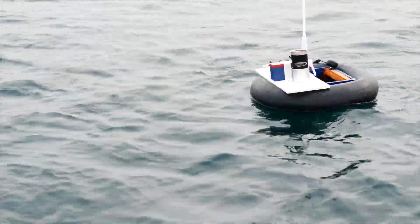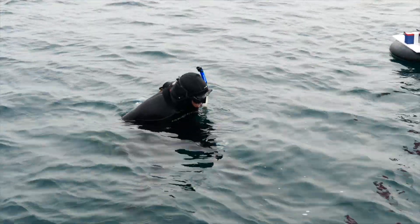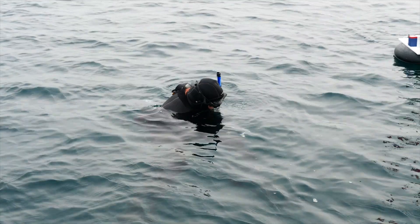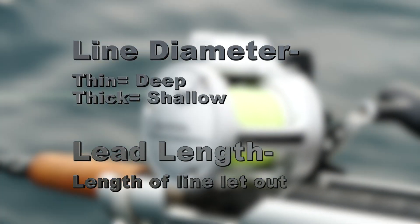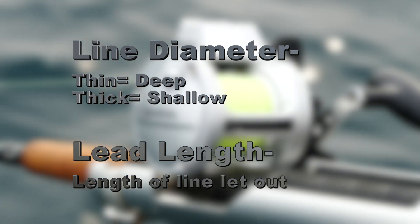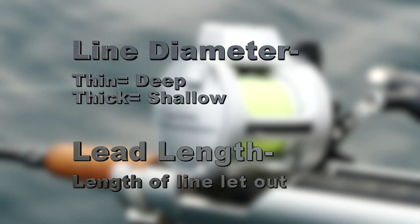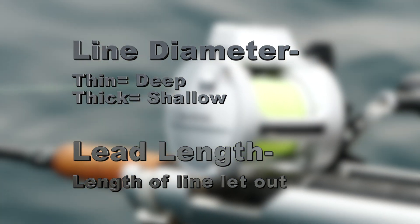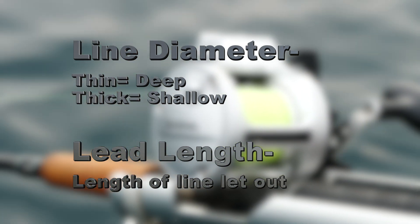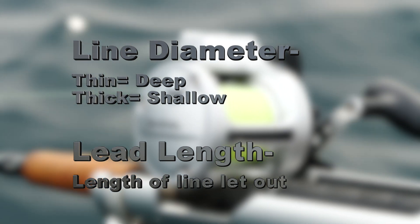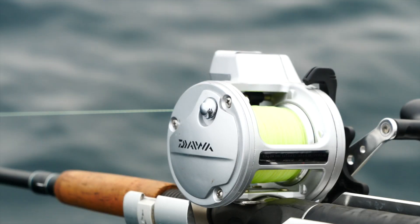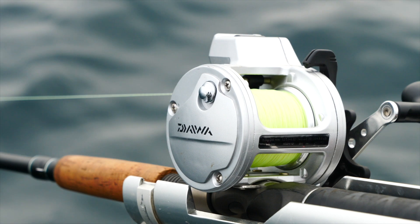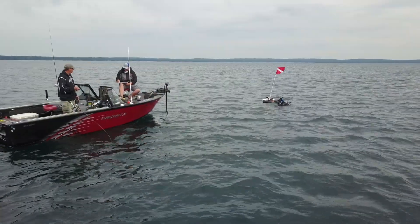The primary factors — the things you've got to be really concerned with — are line diameter and what we call lead length, or feet back. Thinner lines allow crankbaits to dive deeper than thicker lines. The further you put a crankbait back behind the boat, the deeper it's naturally going to dive.